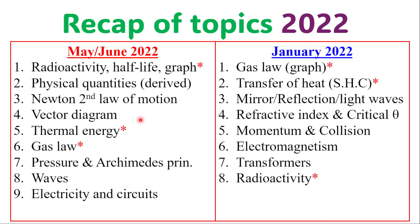And in January 2022, they looked at gas law, and the graph was on gas law, transfer of heat. Specifically, they also tested specific heat capacity. Look at mirrors, reflection, and light waves. They also look at refractive index and critical angle. Also, momentum and collision, electromagnetism, transformers, and radioactivity. Radioactivity has been popping up a lot, so please look out for that.